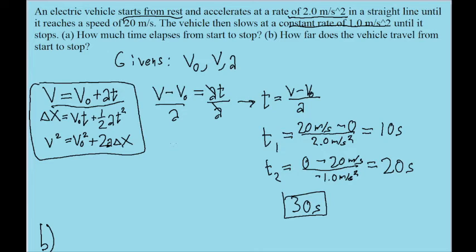Part B is now asking us about the distance that the vehicle travels. Technically we could use any of the equations now, since we're only missing one variable, but I'll go with the third one anyway. I'll go with this one, because since it doesn't mention time, you could technically solve part B first using this one before solving part A.